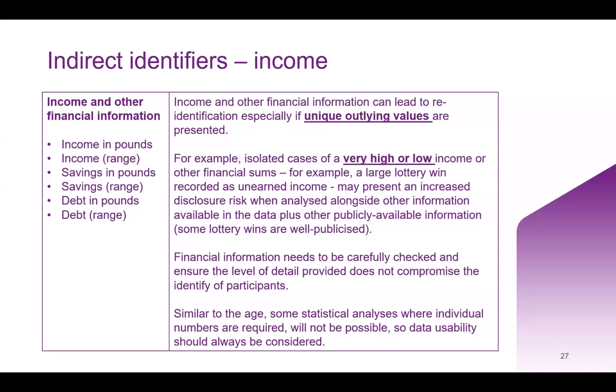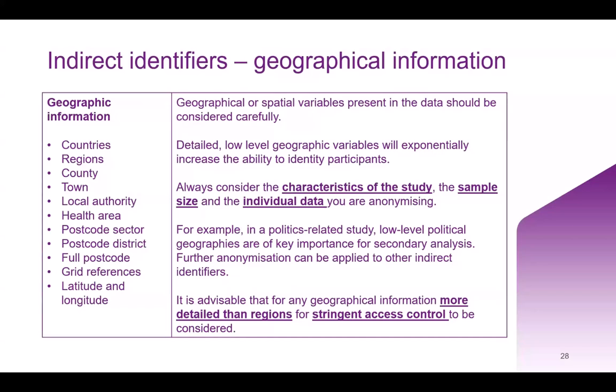Financial information needs to be carefully checked to ensure that the level of detail provided does not compromise the identity of participants. Similar to age, some statistical analyses where individual numbers are required will not be possible after anonymization. Data usability should always be considered alongside whatever you choose to do with that particular variable. Geographic information is one of the most important indirect identifiers, but also one of the most important for secondary research, and can vary from countries and regions to postcodes and even latitude and longitude.